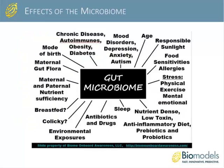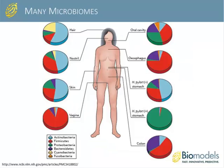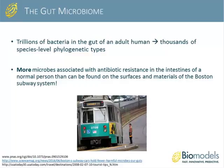We've all heard a lot about the gut microbiome and how it can affect everything from autoimmune disease and food sensitivities to neurological diseases such as mood disorders and autism. Bacteria colonize almost every environmentally exposed surface of the human body, with the greatest quantity and diversity found in the lower GI tract. Biomes also exist for the skin, hair, and all mucosal surfaces like the mouth, nostrils, and vagina. The gut microbiome describes the trillions of bacteria that live in the gut of an adult human, representing thousands of species-level phylogenetic types.